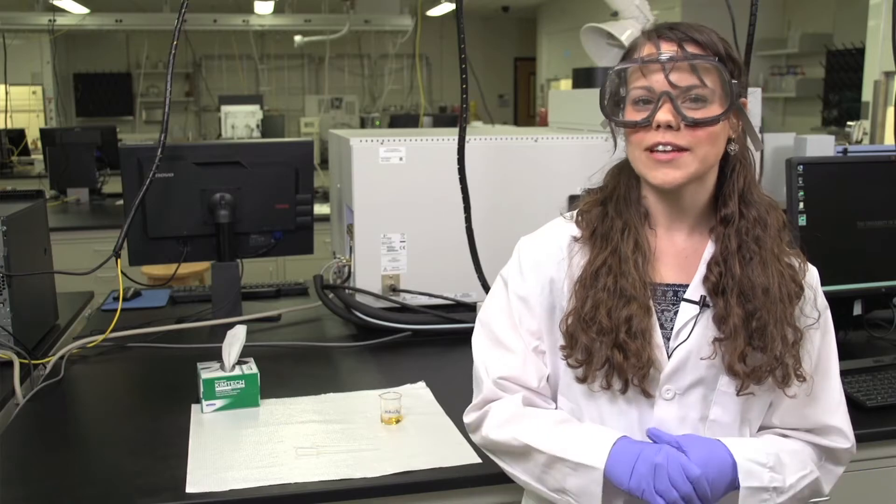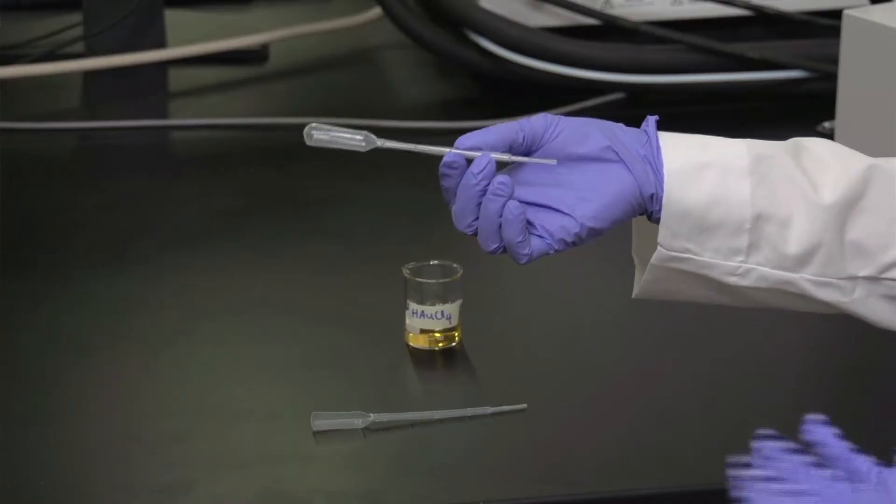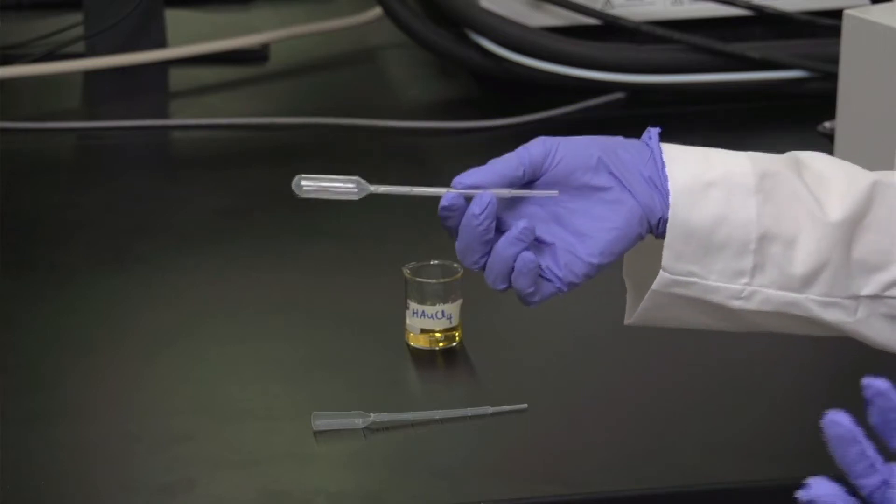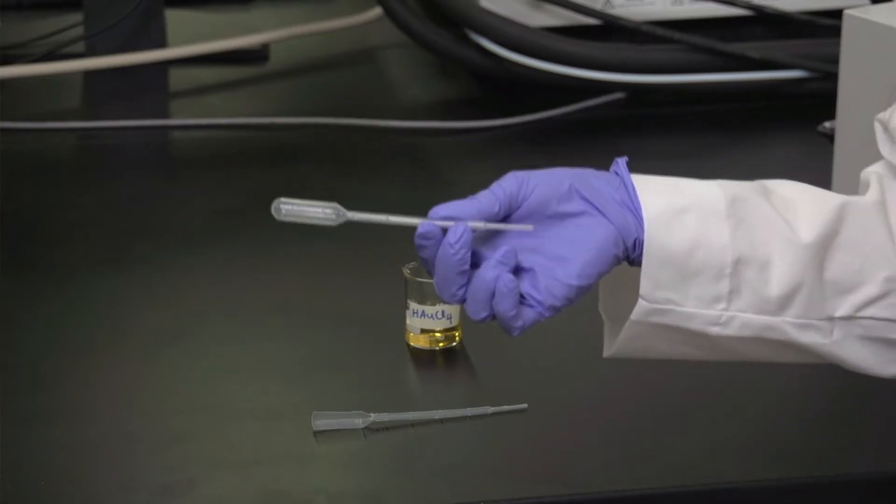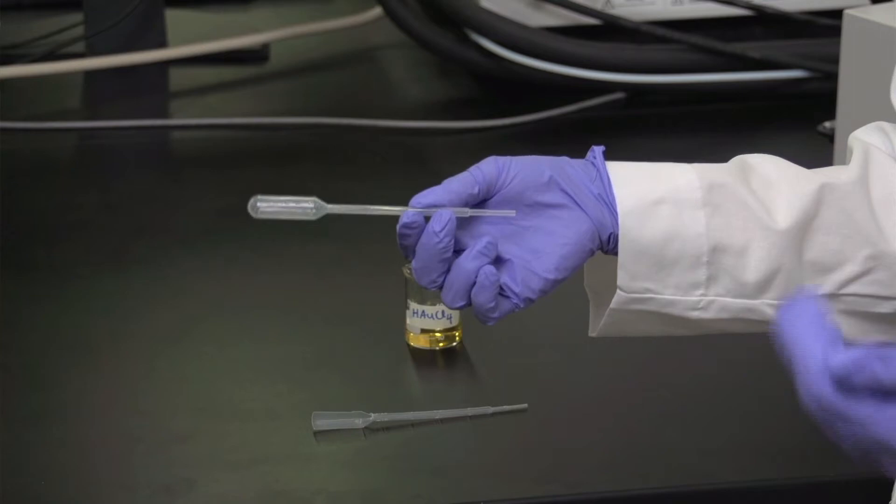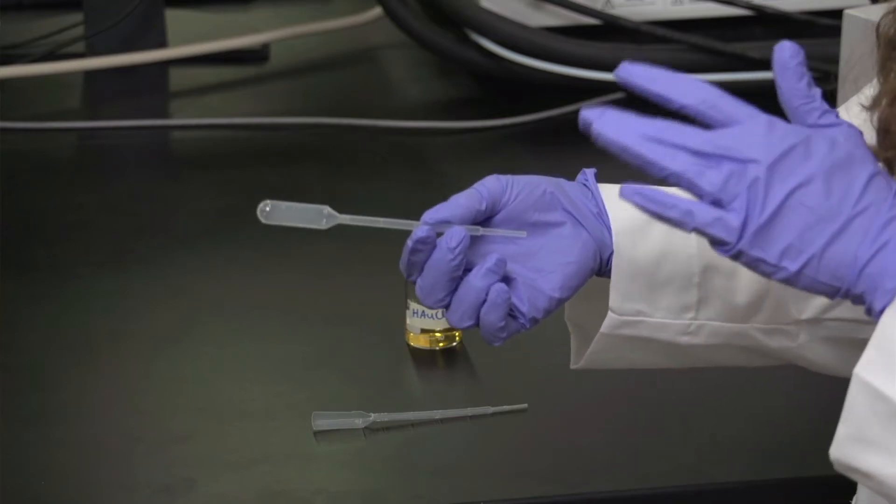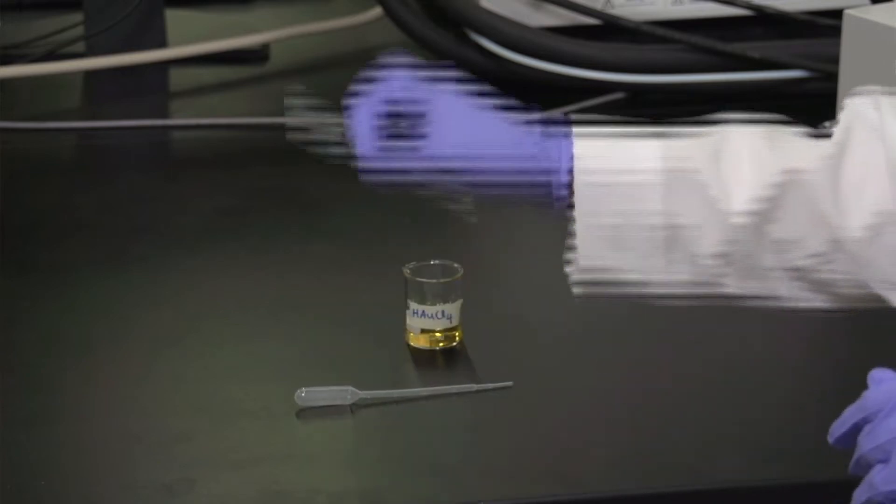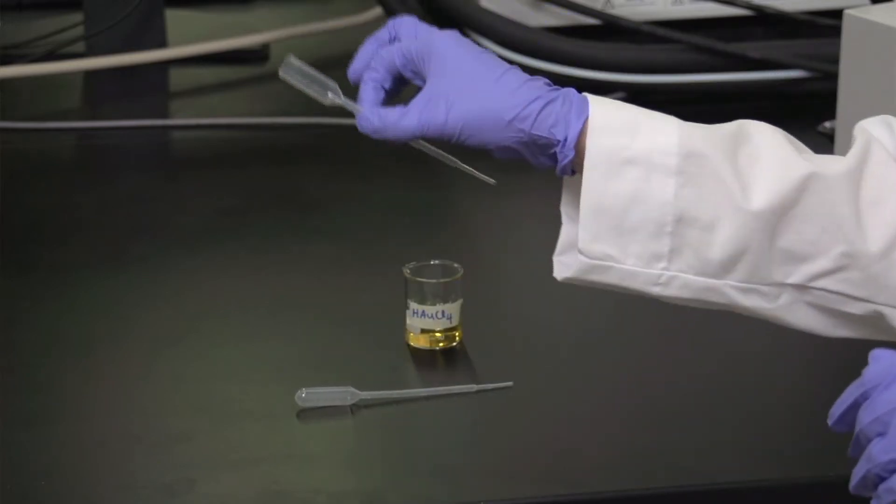So today you're going to be doing the UV-Vis experiment with your synthesized gold nanoparticles. The first step is you're going to need to prepare the chloro-auric acid. Chloro-auric acid is highly corrosive, so you're going to need to use a plastic transfer pipette to measure and weigh out the chloro-auric acid. To do this, you can just cut the plastic pipette into a scoop.